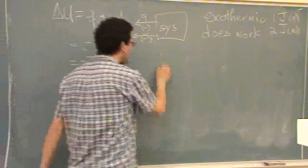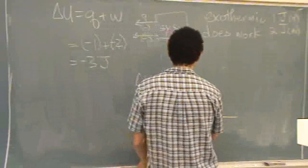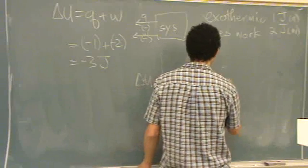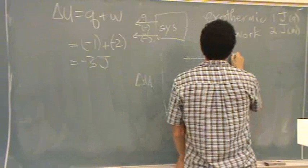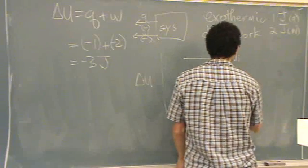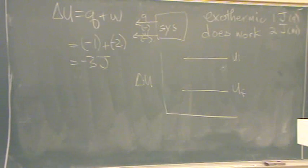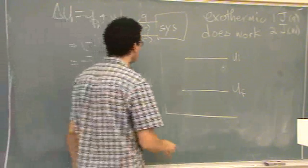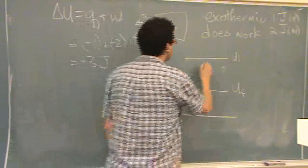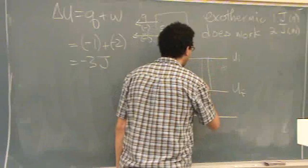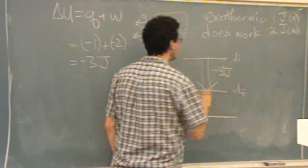If you want to draw a diagram for it, you go delta U and you go two lines. U initial and U final. I'm putting U final on the bottom because it's dropping in energy. Or I guess you could just call it U. This is dropping in energy a total of negative three joules.